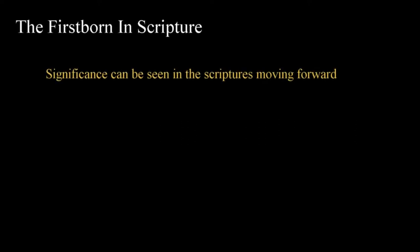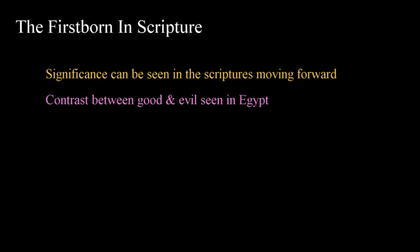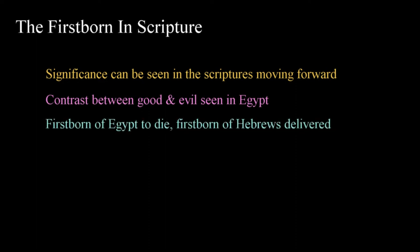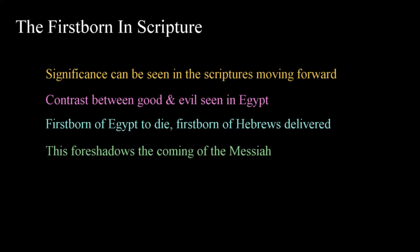The idea of the firstborn being sanctified can be traced forward in the scriptures to see its significance. The line created between the Egyptians and Hebrews was a contrast of good versus evil. As the firstborn of Egypt would die, the firstborn of the Hebrews would be saved. We can take a look at how the firstborn and the line between salvation and condemnation foreshadows the coming of the Messiah, following this thread through the Bible and noting the prophetic emphasis. The book of Psalms has many passages that speak of the coming of the Messiah.